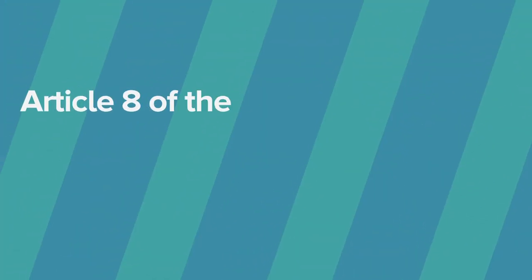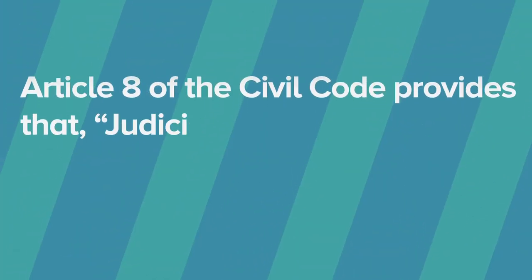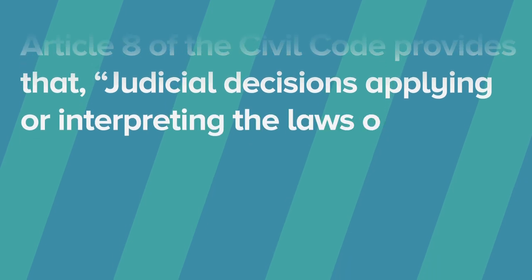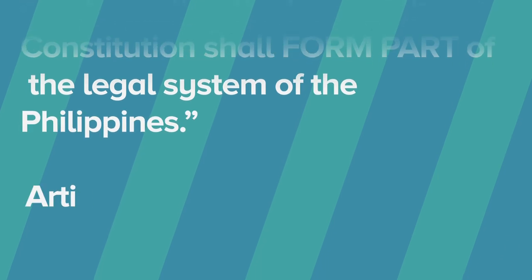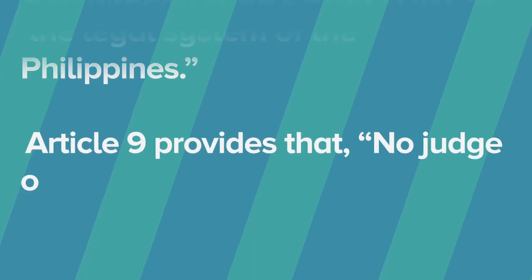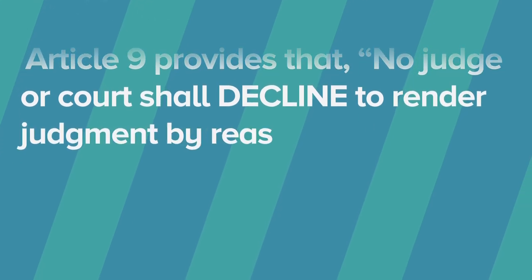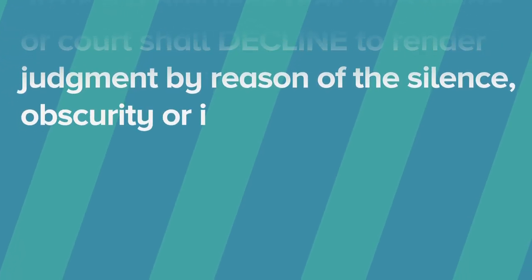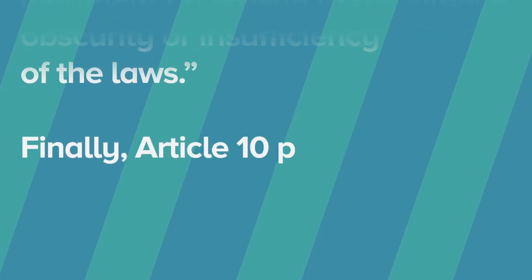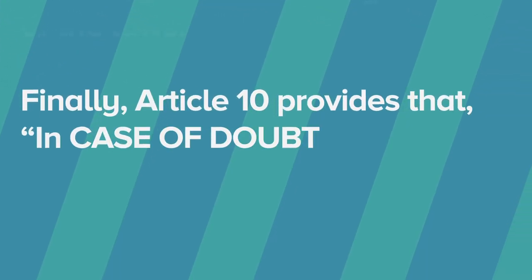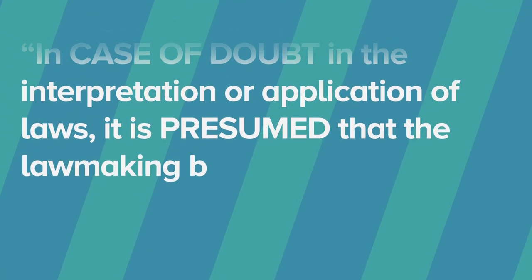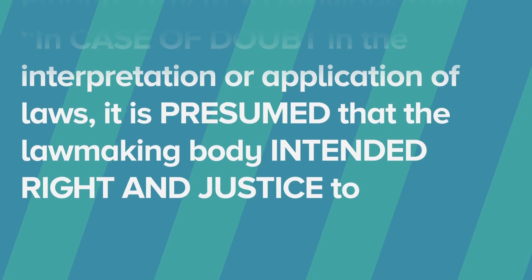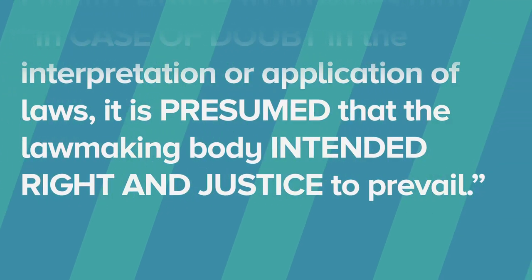We're taking a look at Articles 8 to 10 of the Civil Code. Article 8 provides that judicial decisions applying or interpreting the laws or the Constitution shall form part of the legal system of the Philippines. Article 9 provides that no judge or court shall decline to render judgment by reason of the silence, obscurity, or insufficiency of the laws.